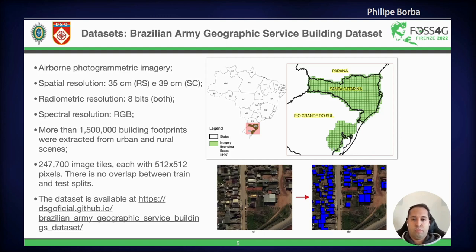We extracted manually more than 1.5 million building footprints from either urban or rural scenes. The dataset has more than 257,000 images, each 512 pixels by 512 pixels. There is no overlap between the train and test splits, and the dataset is available online.